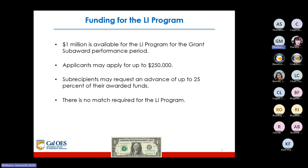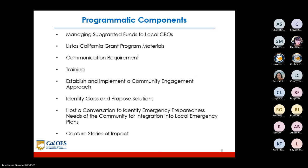One million dollars is available for the LI program for the grant sub-award performance period. Applicants may apply for up to $250,000. Sub-recipients may request an advance of up to 25 percent of their awarded funds. There is no match required for the LI program.